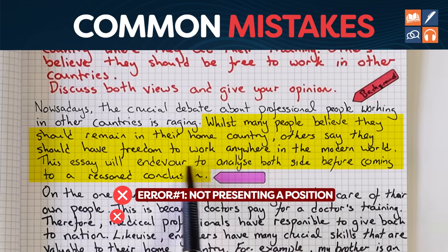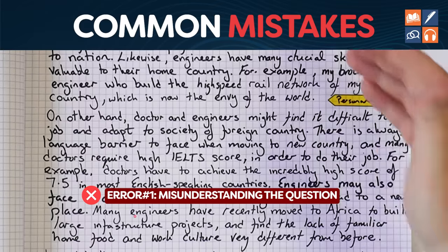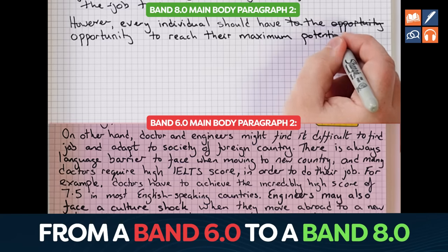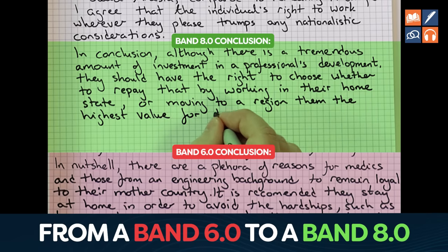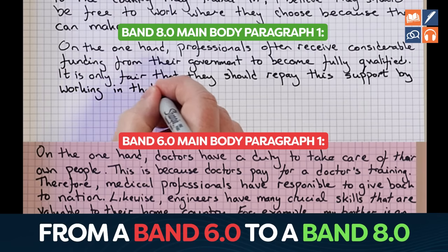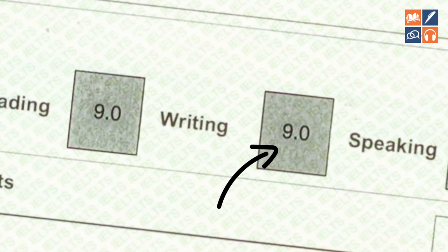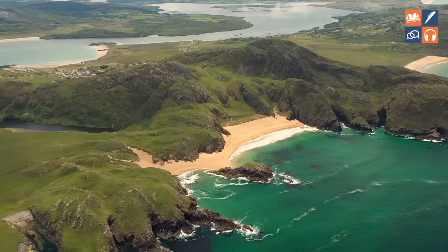Today I'm going to take a real band 6 student essay that is full of the most common mistakes that we see, and I'm going to show you sentence by sentence how to transform that essay from a band 6 to a band 8. So you'll be able to see how simple it is to transform your writing and get the score that you need. So if your aim is to get a band 7, 8, or 9 in IELTS writing and relocate to the country of your dreams, you're in the right place.